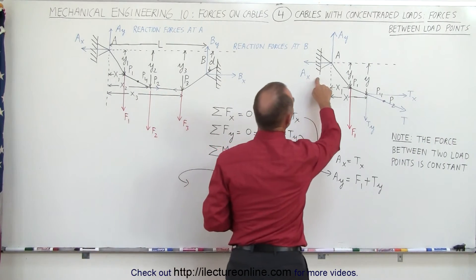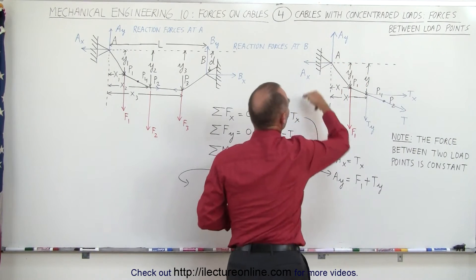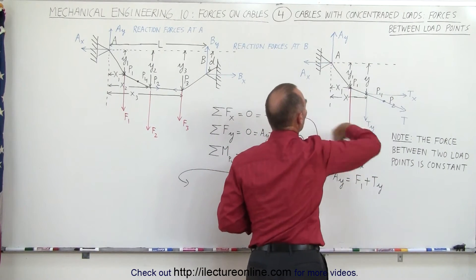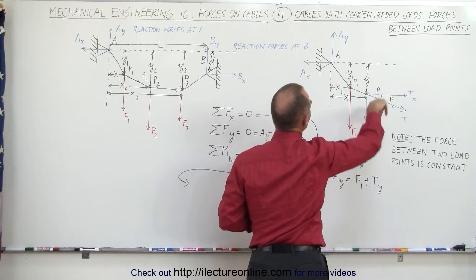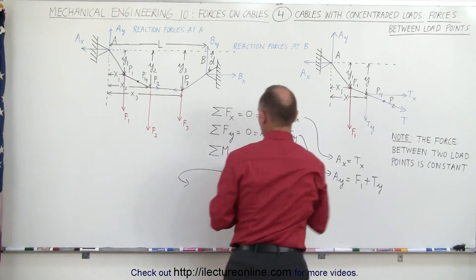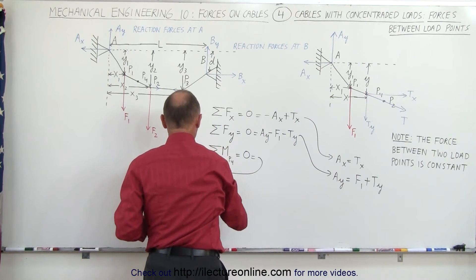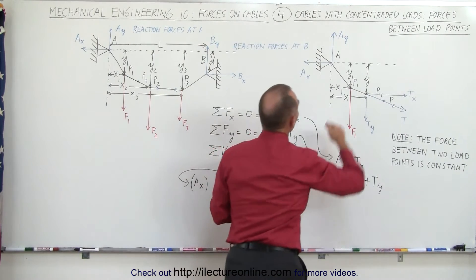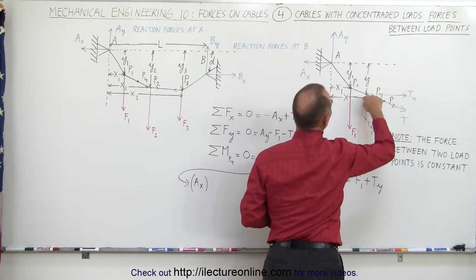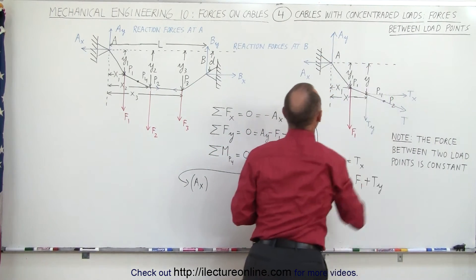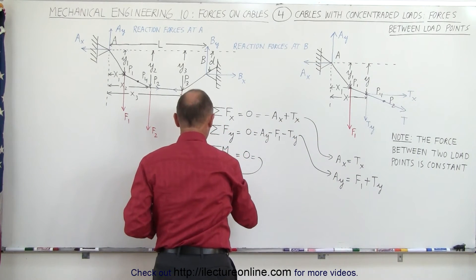Let's consider A sub x. It's pointing in this direction. It causes a counterclockwise torque or moment. Therefore, that's a positive moment. So we have A sub x times the perpendicular distance from the line of action of the force to the pivot point. That would be this distance y. So A sub x times y.